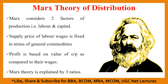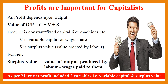Marx explained this theory by three important ratios, which we will be discussing in detail. Profits are very important for the capitalist and these profits mainly depend upon the value of output. The value of output is given by c plus v plus s, where c is the constant or fixed capital like machines, v is the variable capital or the wage share which includes wages and salaries, and s is the surplus value which is the value created by the labor — also called the profit share.